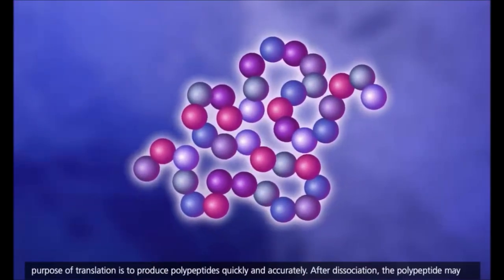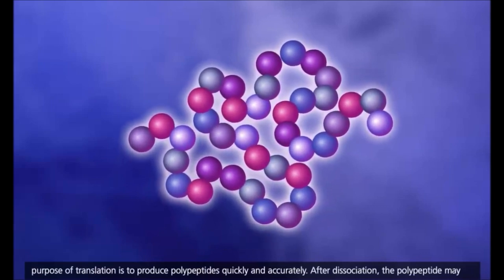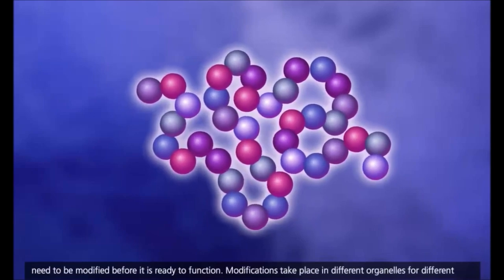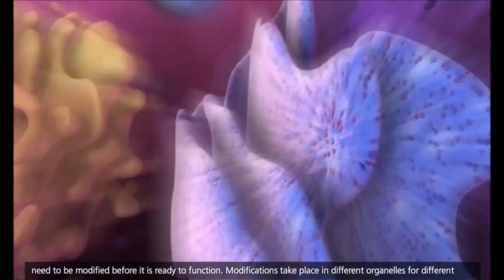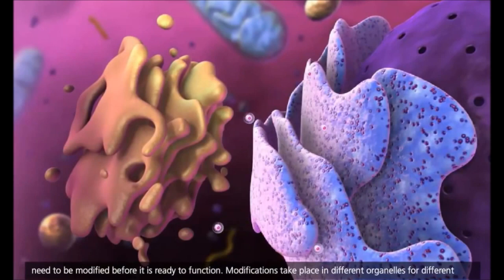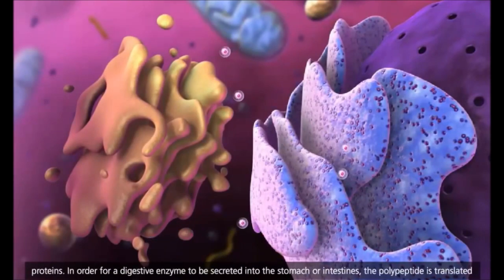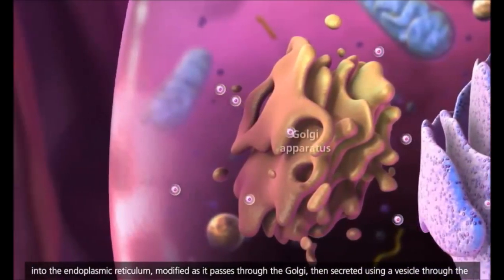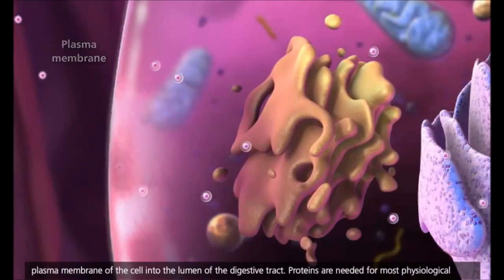The purpose of translation is to produce polypeptides quickly and accurately. After dissociation, the polypeptide may need to be modified before it is ready to function. Modifications take place in different organelles for different proteins. In order for a digestive enzyme to be secreted into the stomach or intestines, the polypeptide is translated into the endoplasmic reticulum, modified as it passes through the Golgi, then secreted using a vesicle through the plasma membrane of the cell.